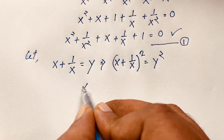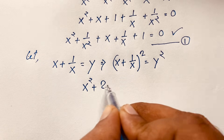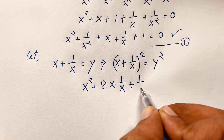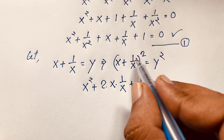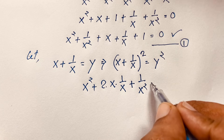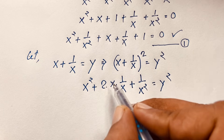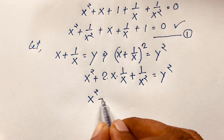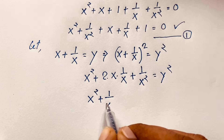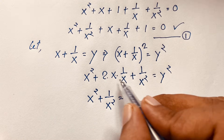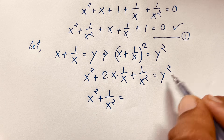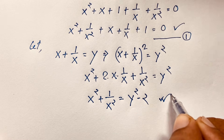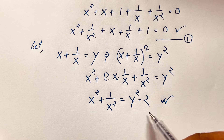You can see that this is x squared plus 2 times x times 1 over x, plus 1 over x squared, equal to y squared. Now the x cancels out, and we find x squared plus 1 over x squared equals y squared minus 2. If I move the positive 2 to this side it will be negative 2, so x squared plus 1 over x squared is equal to y squared minus 2.